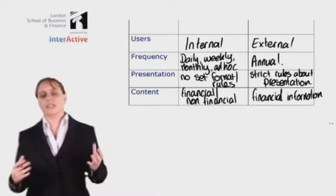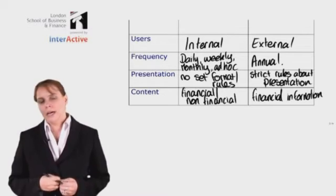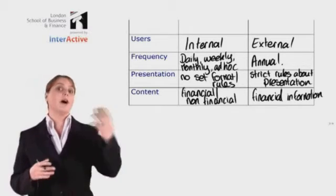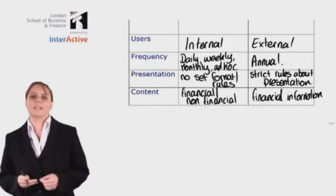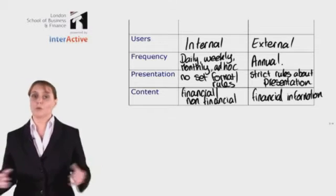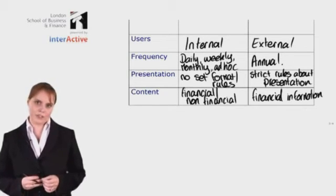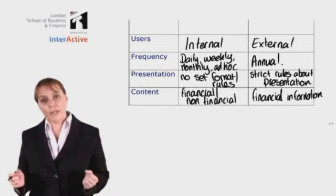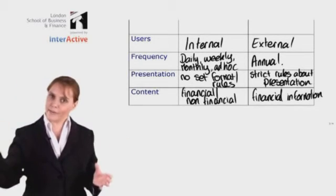So we've looked at the key differences between management accounting and financial accounting, and I've repeatedly used the word 'information' — providing information to management within an organization. Let's think about that word for a few minutes. What is information? And more specifically, we need to consider: what is good information? To understand what information is, we need to consider the distinction between data and information.